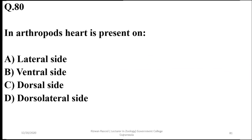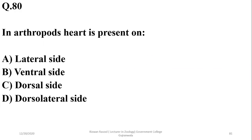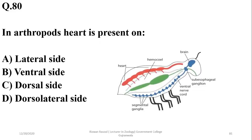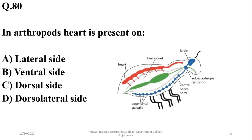Question 80: In arthropods, the heart is present on the dorsal side — the upper side. So C seems the better option.